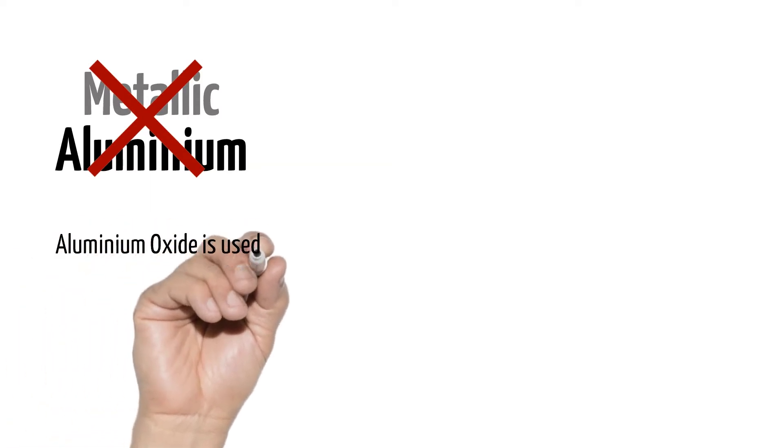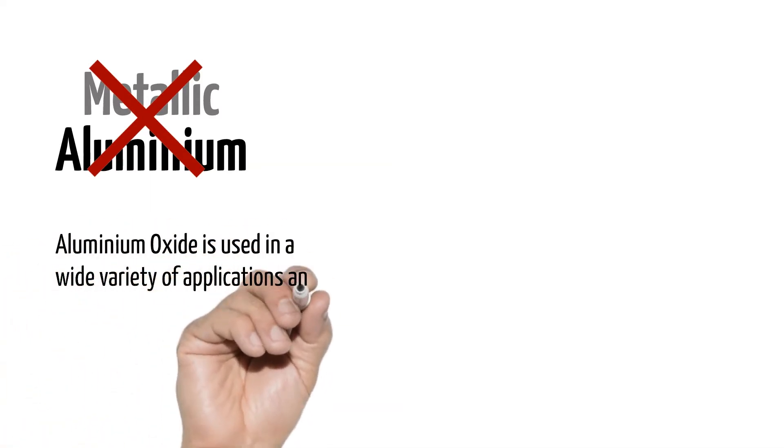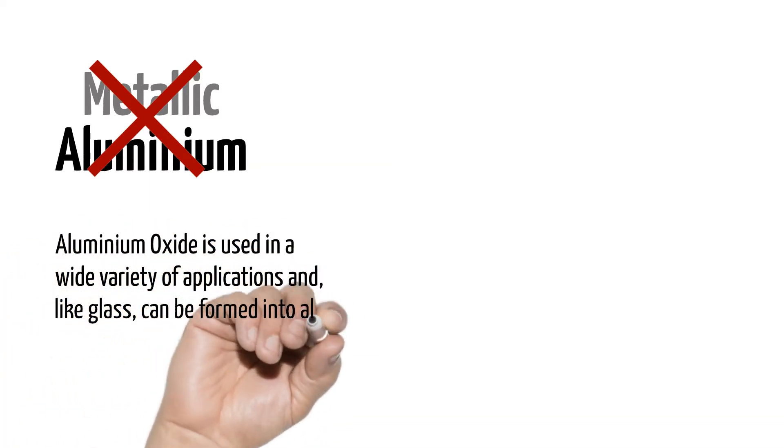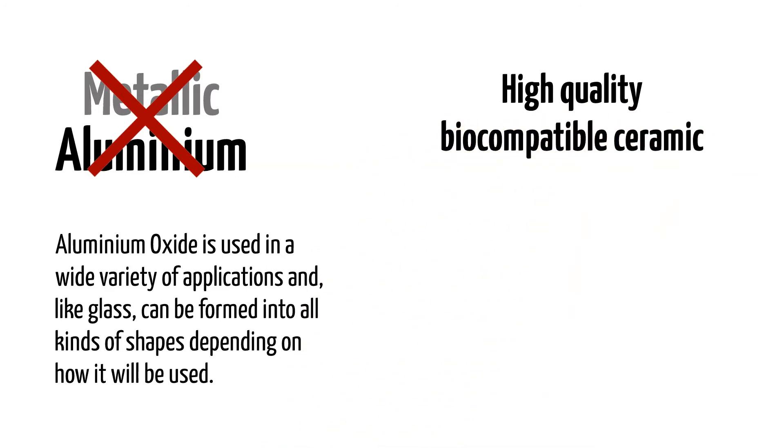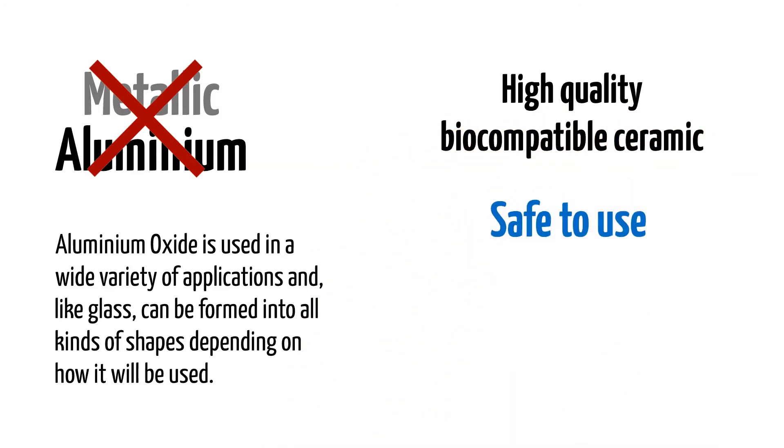This is not the metallic form of aluminum. That's a very important distinction. Aluminum oxide is used in a wide variety of applications and, like glass, can be formed into all kinds of shapes depending on how it will be used. It is considered a high-quality, biocompatible ceramic, meaning it is safe to use.